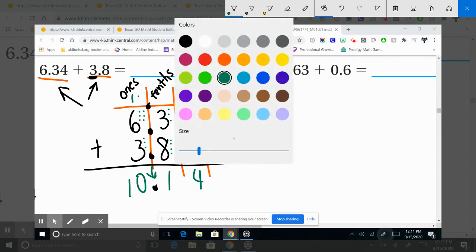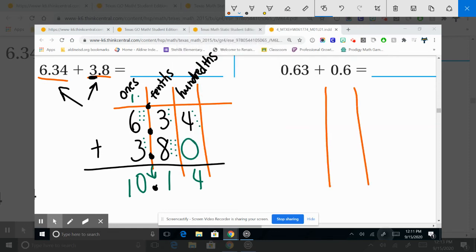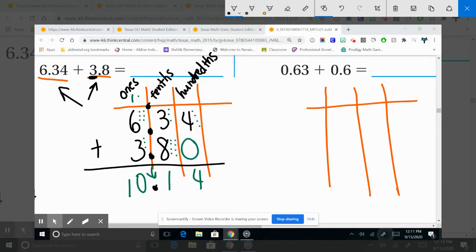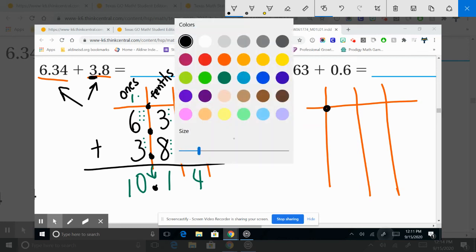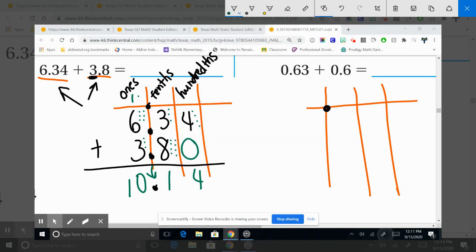One more time. Create your place value table. Place your decimal. And let's begin. Zero, and don't forget your decimal.